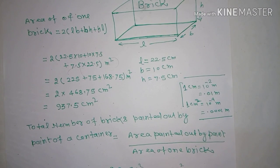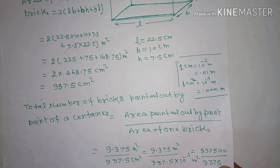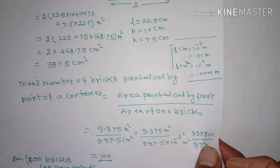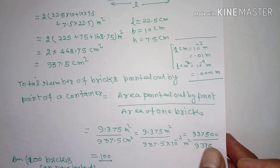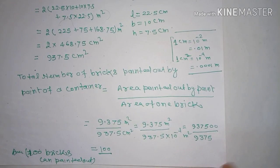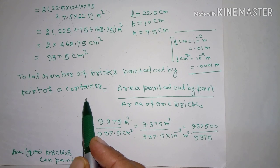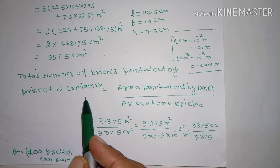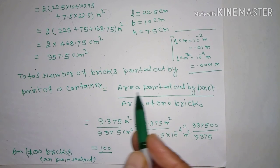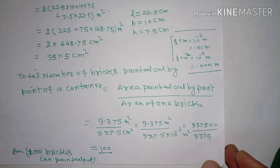Now, the number of bricks is calculated by dividing the total paintable area by the surface area of one brick.